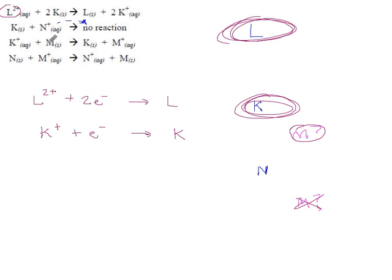Next is M which goes from M+ to M0. I'll only need a single electron.